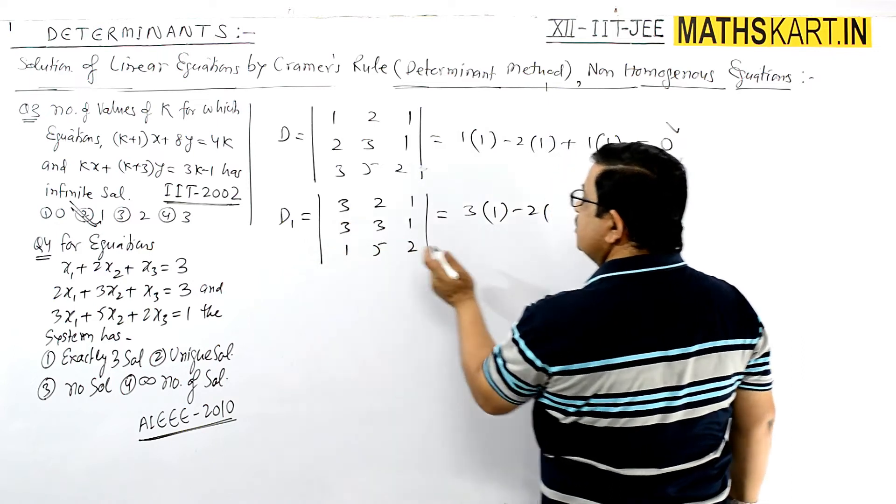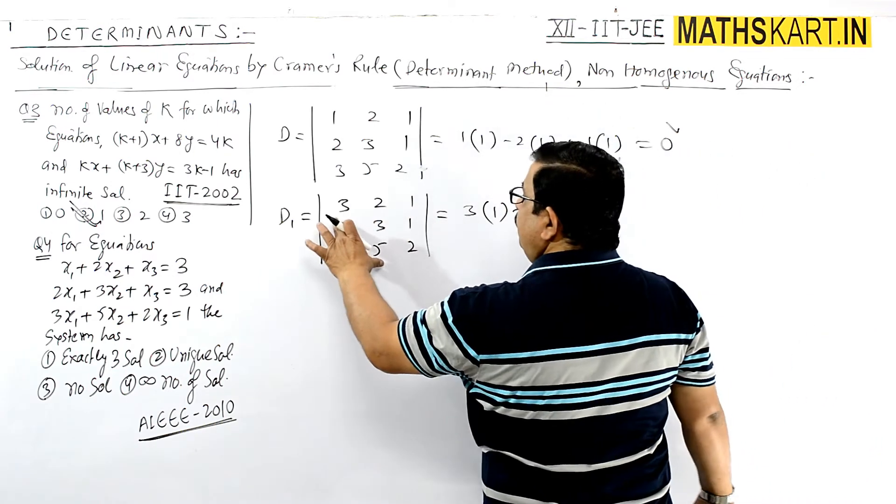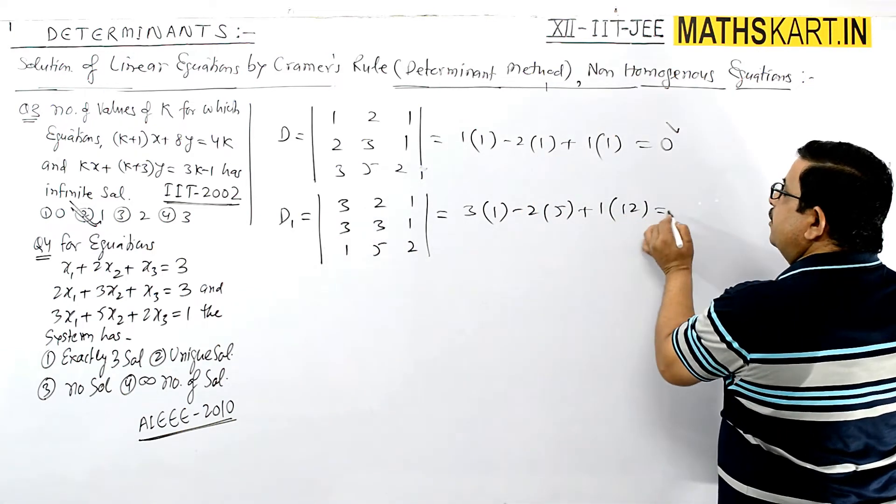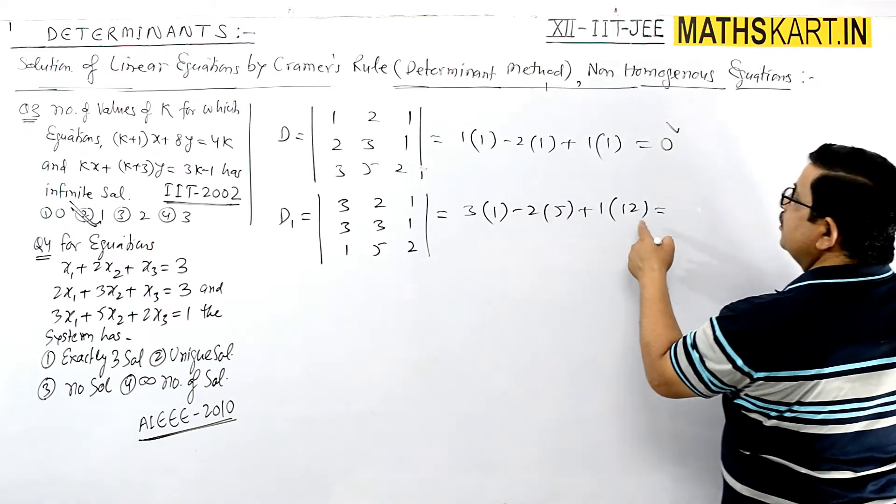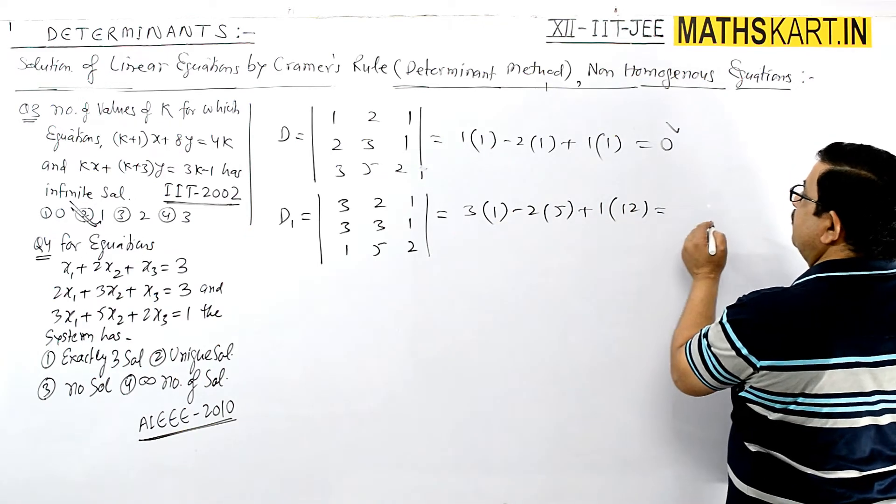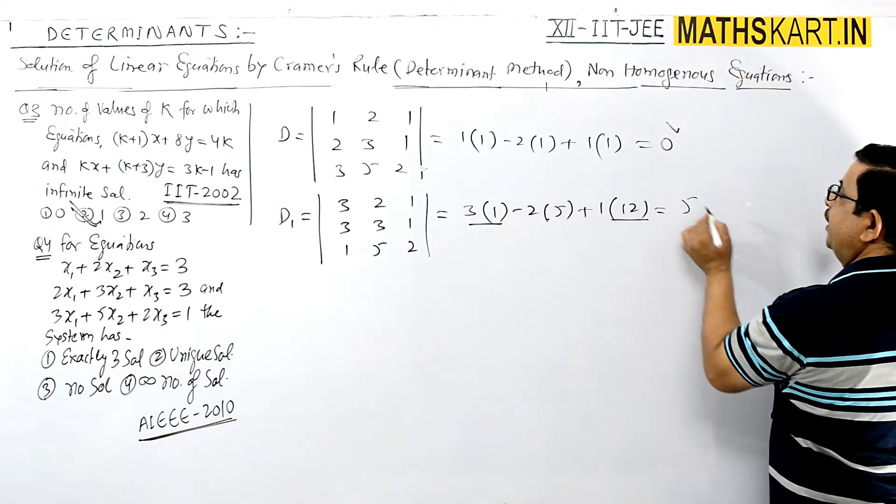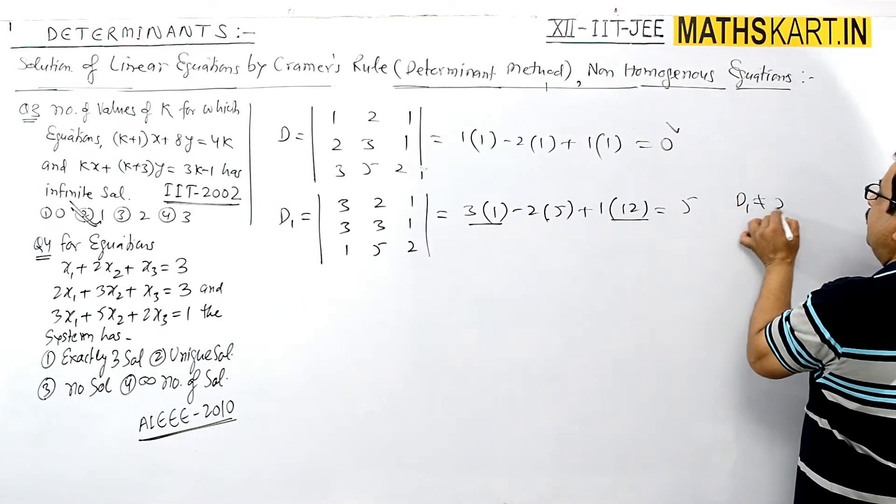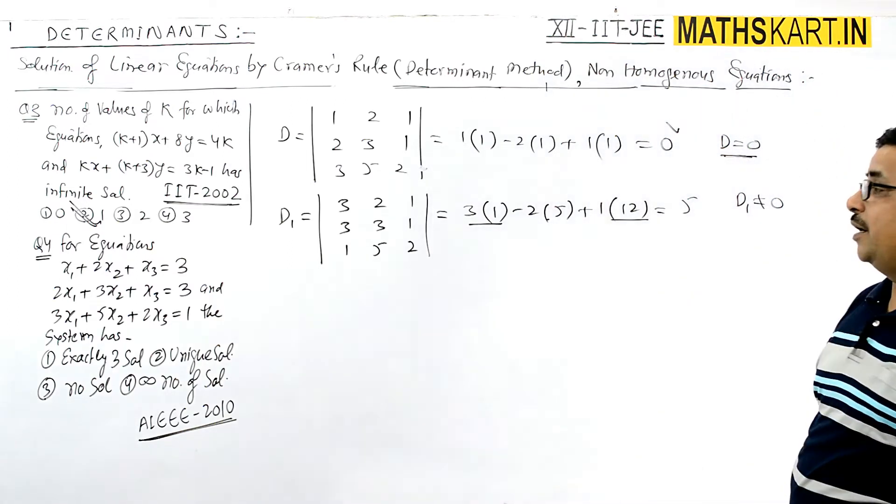This gives 3(1) - 2(5) + 1(12) = 3 - 10 + 12 = 5. So D1 ≠ 0. We have D = 0, but D1 is not equal to zero.